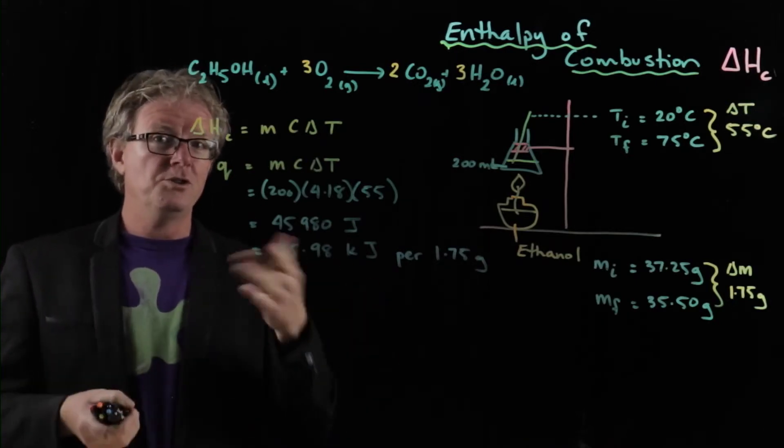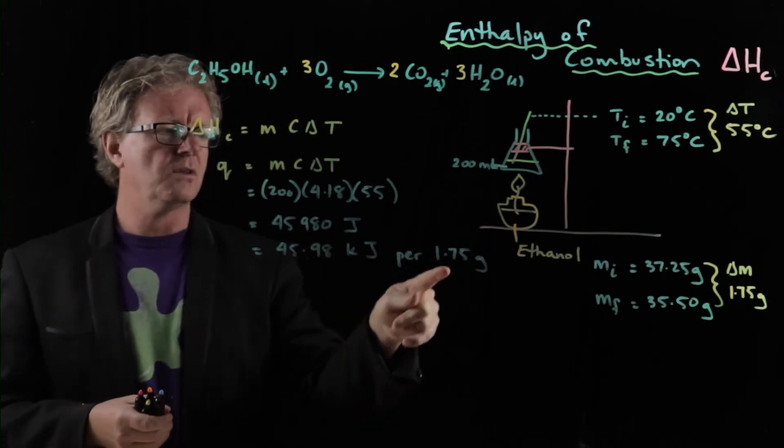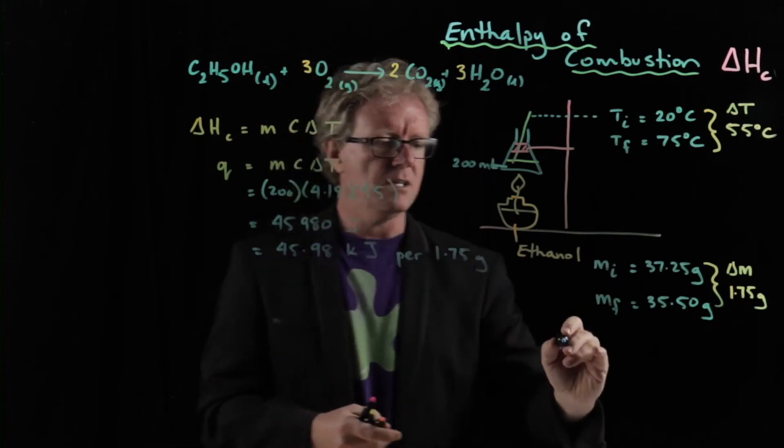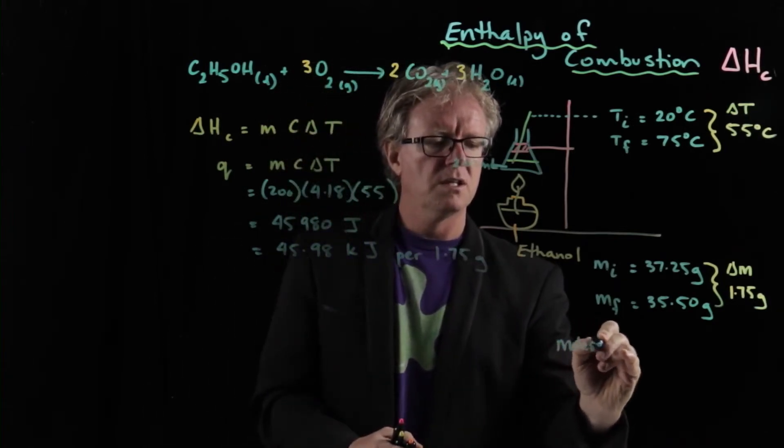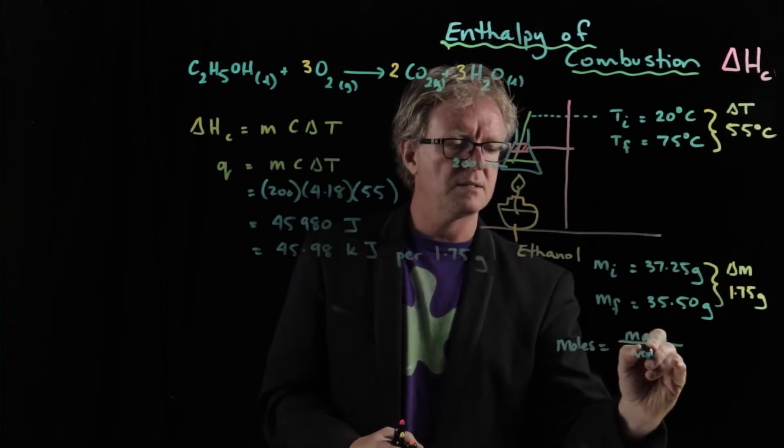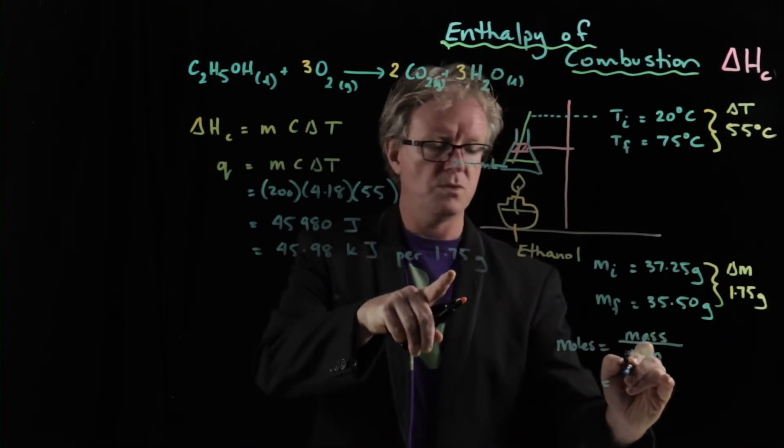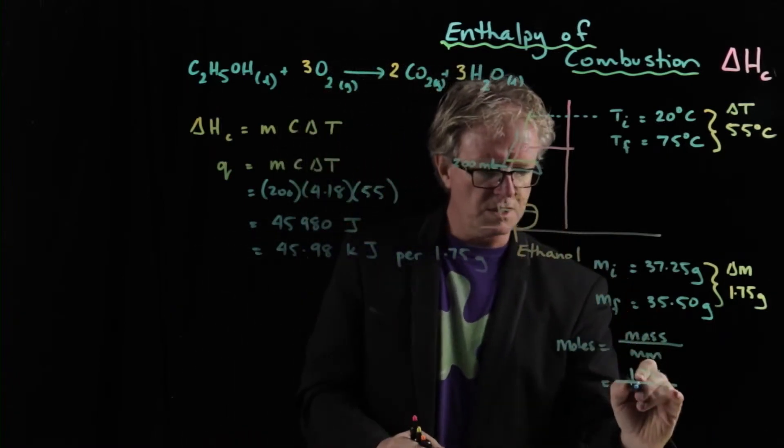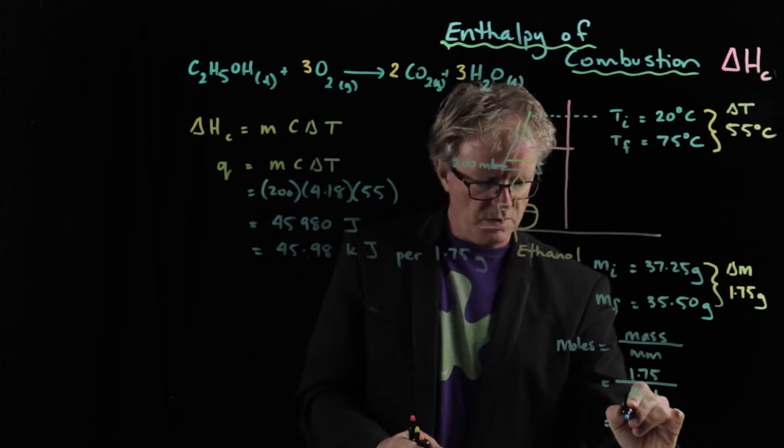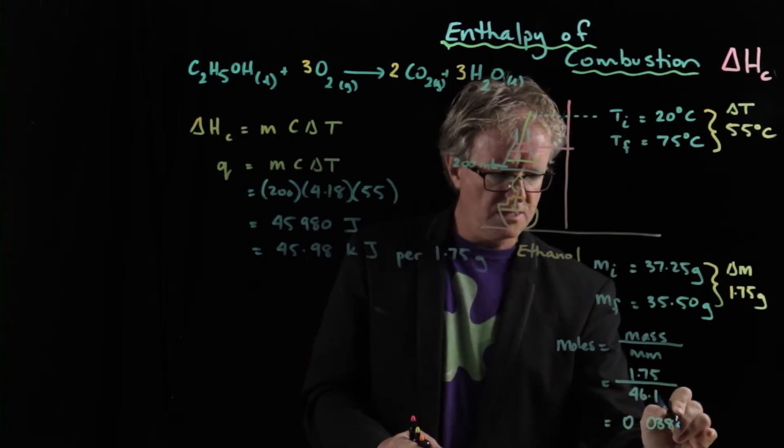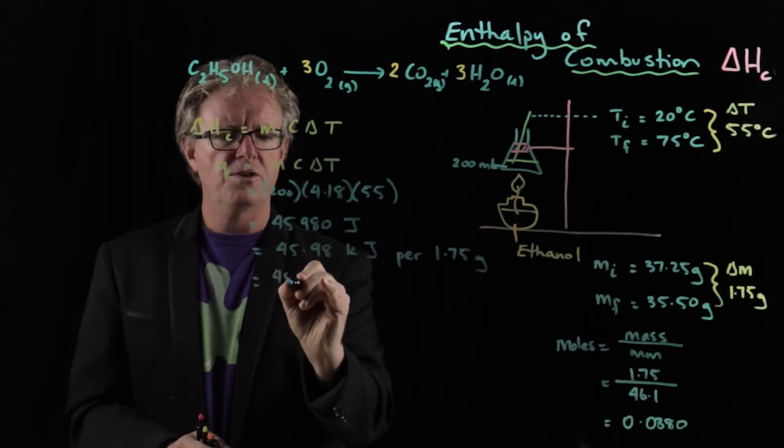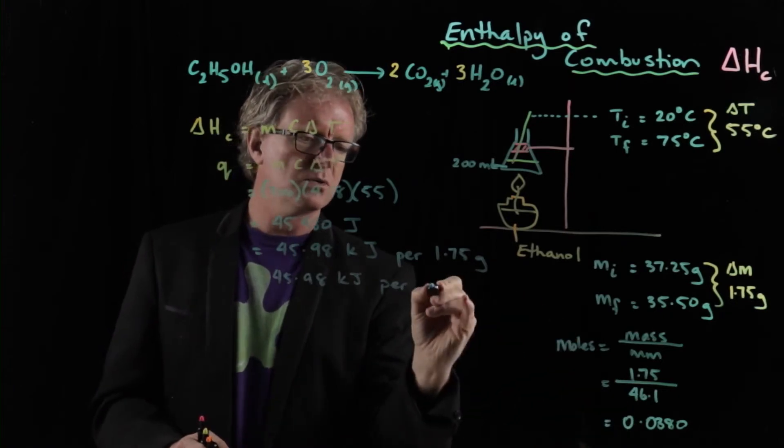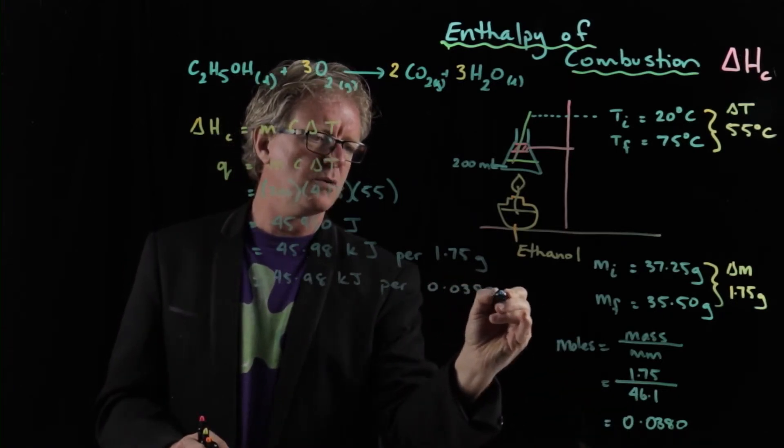We'll do both and then you choose which one makes sense to you. So first of all, let's find out how many moles that is, 1.75. Let's take that over here. And we know our relationship: moles equals mass divided by molecular mass. And so the mass that we used is 1.75 grams. The molecular mass of ethanol is 46.1, and so we ended up with 0.0380 moles.